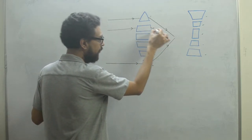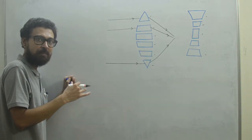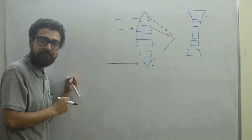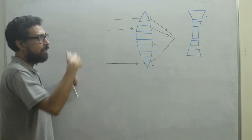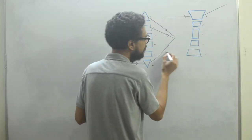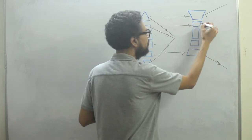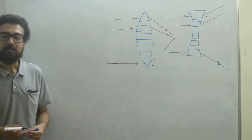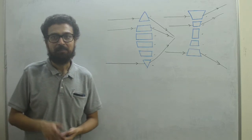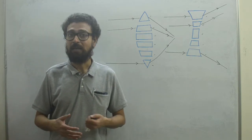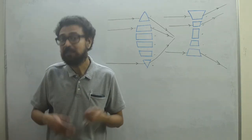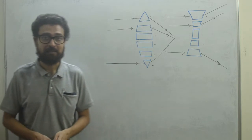If we imagine the lens to be an arrangement of several prisms, then for a convex lens the bases are arranged such that rays converge, acting as a converging lens. For a concave lens, the prism bases are arranged the other way, so rays diverge — making it a diverging lens. So we can observe the divergence or convergence of rays by thinking of lenses as small prisms constructed in a particular arrangement. Convex lens works as a converging lens, and concave works as a diverging lens.